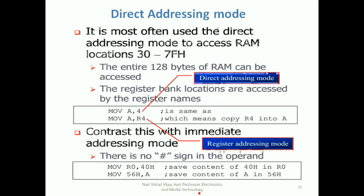In direct addressing mode, you literally move the content of an address location. For example, 40h — if you put a hash in front of 40h, it becomes an immediate data and you move the number itself to a register. But if you do not put a hash, then 40h is an address location, a memory location from where you take data and move it to your register. This is called direct addressing mode.